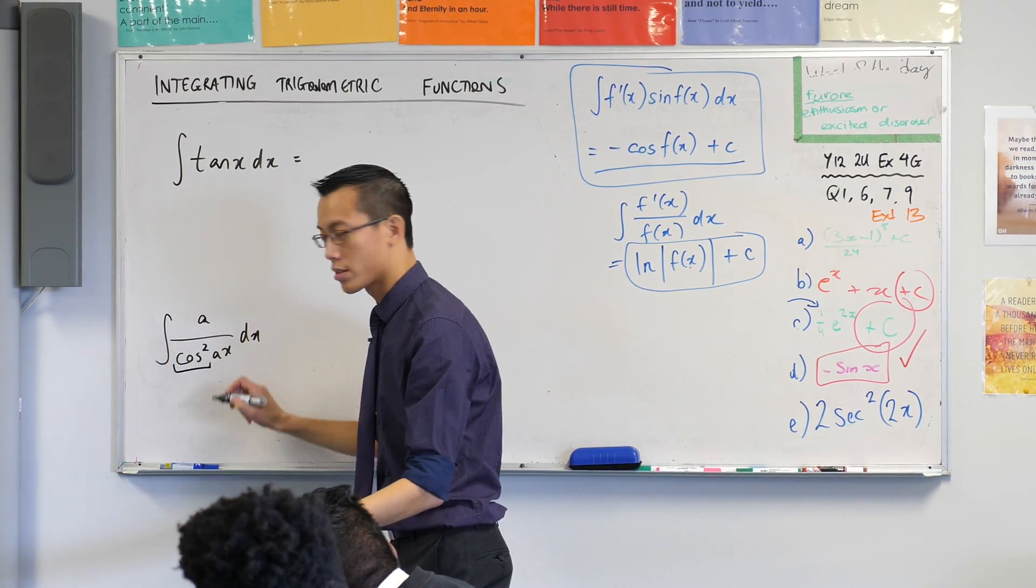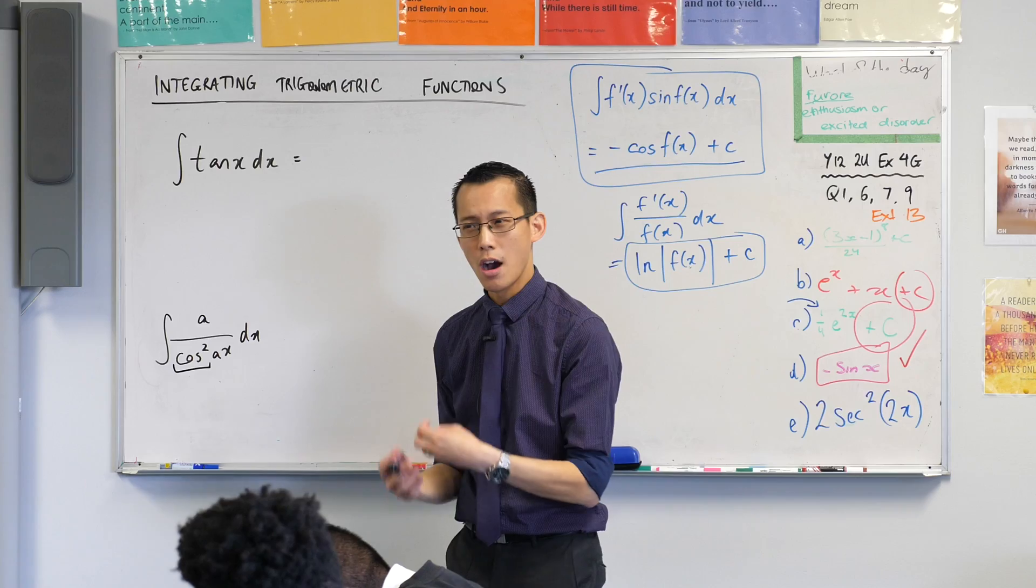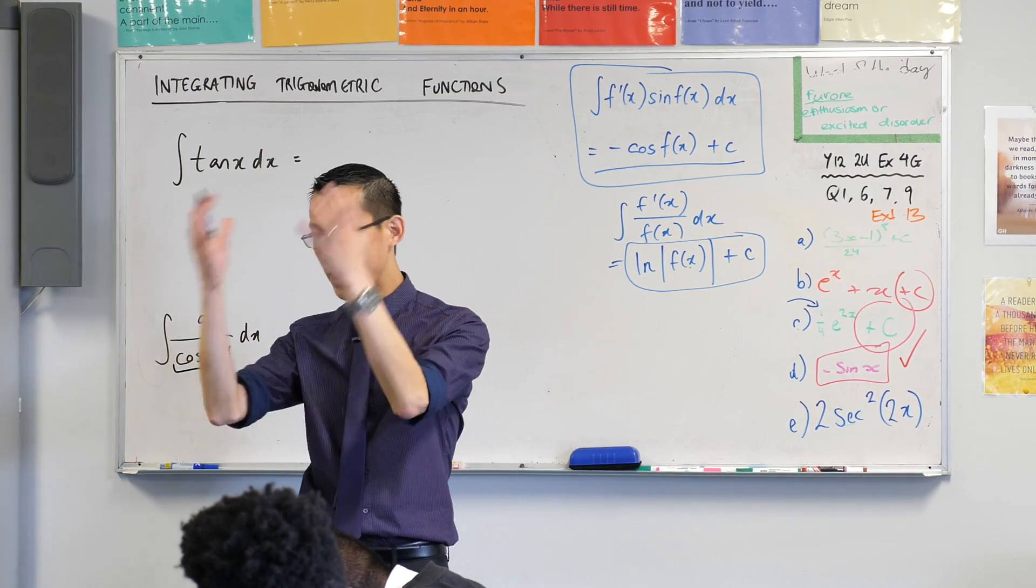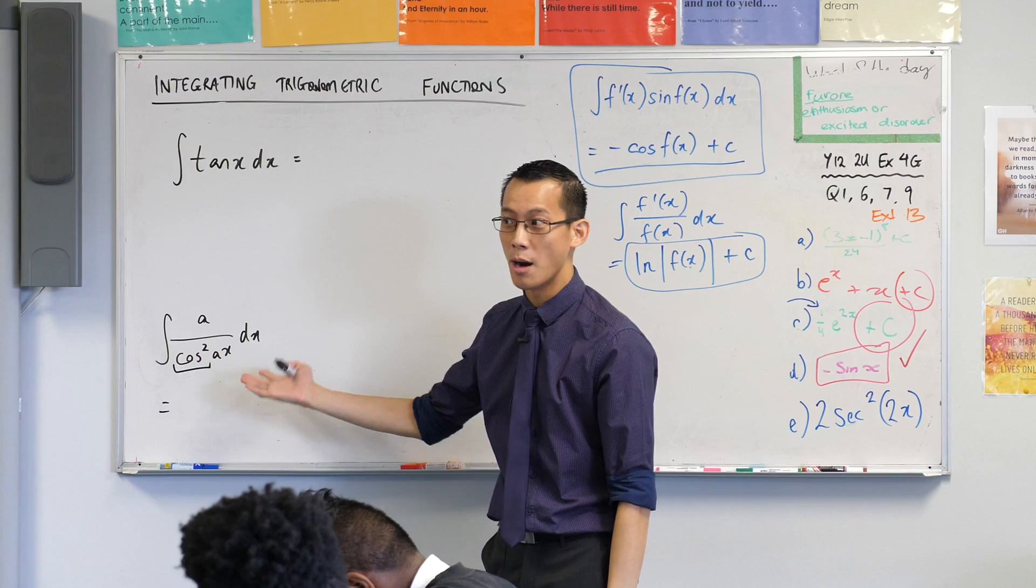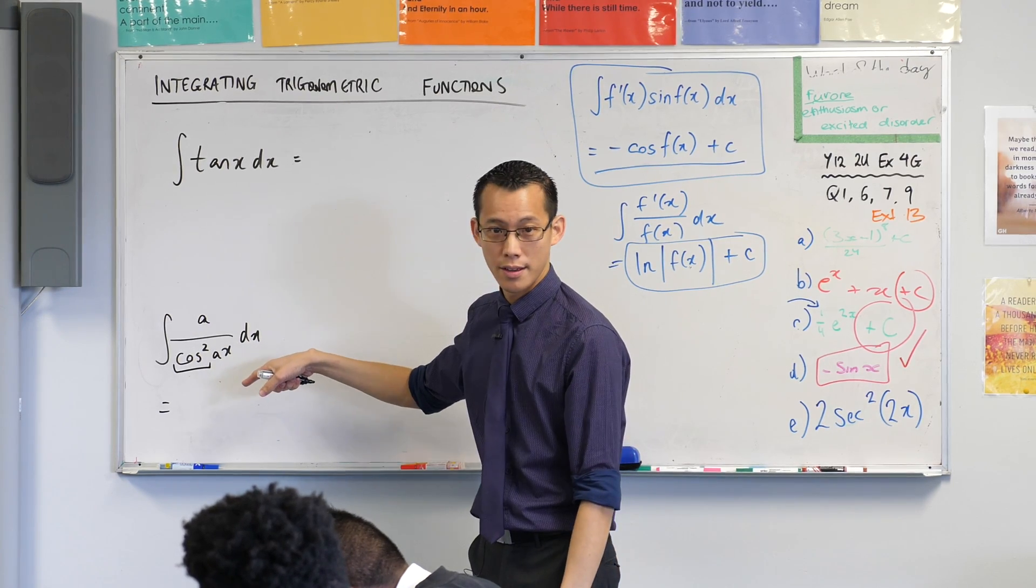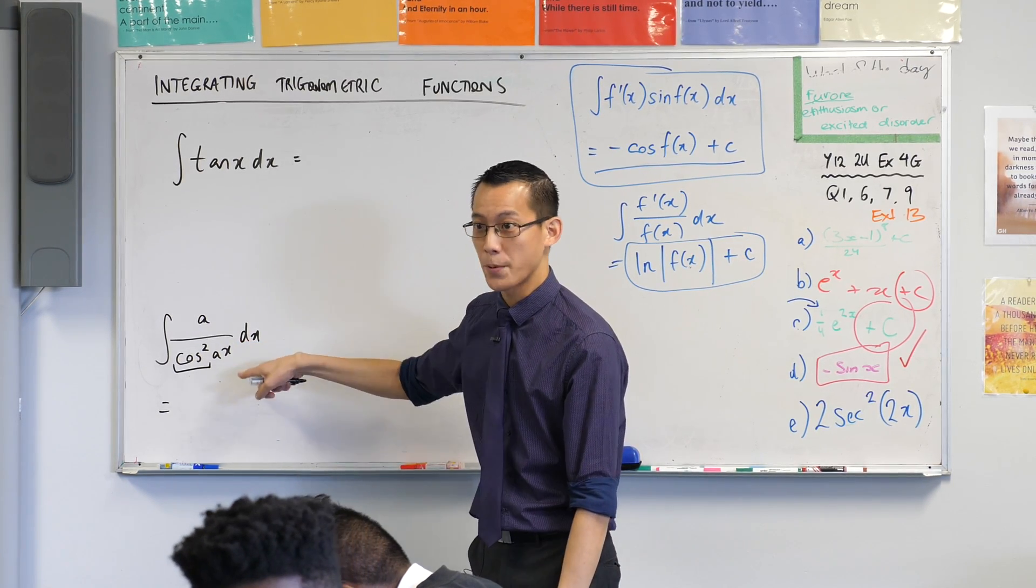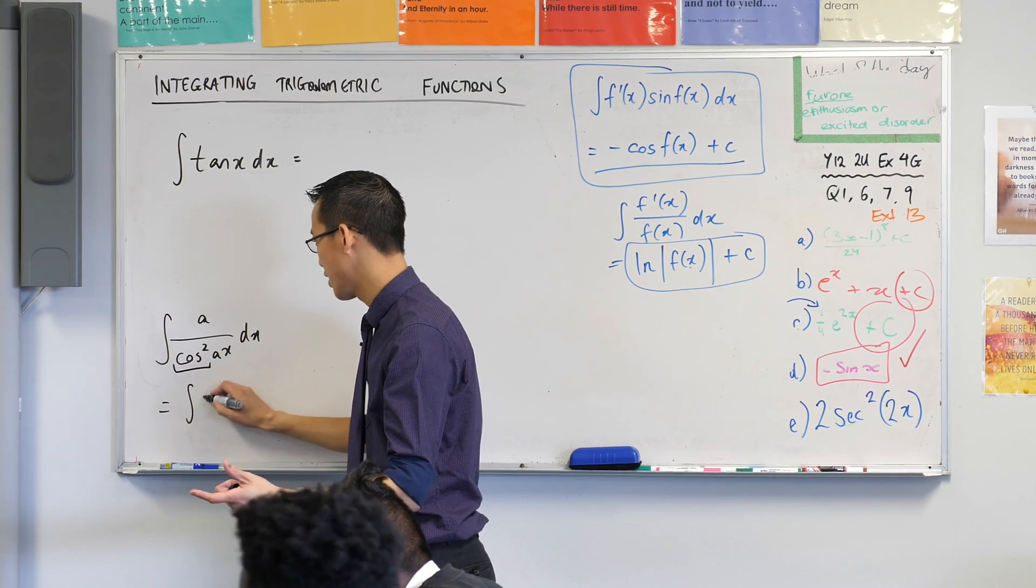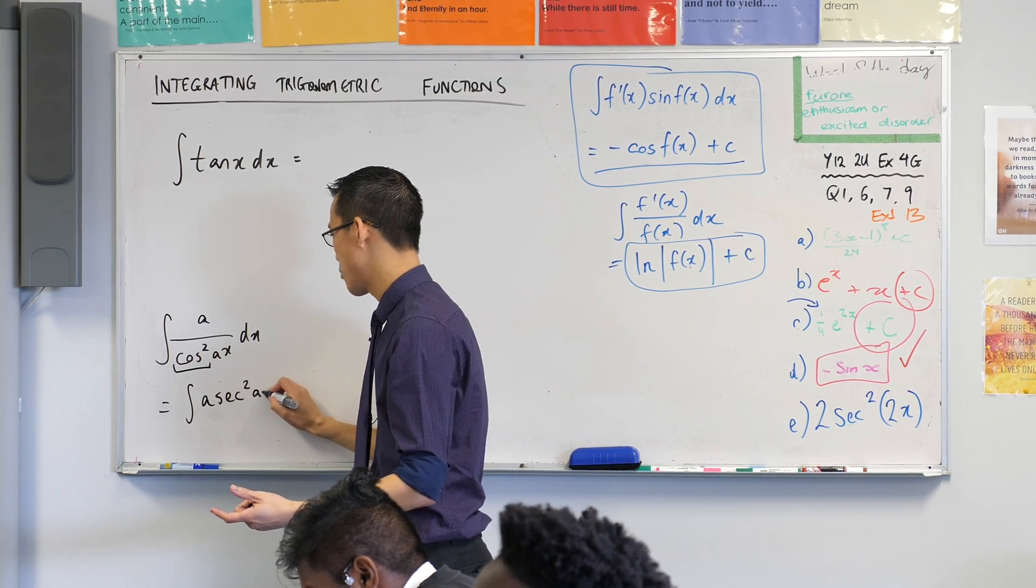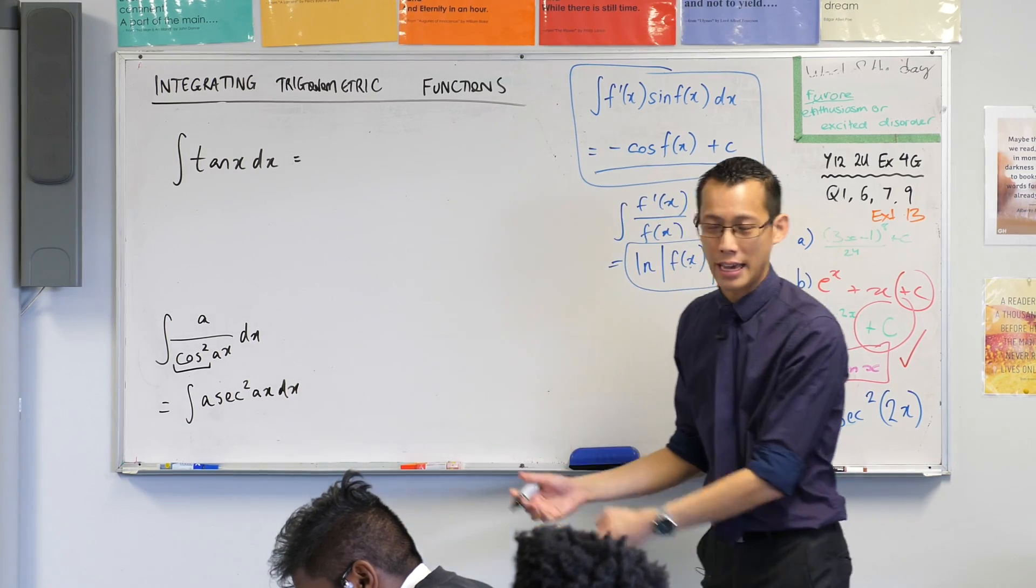Because this cos squared on the denominator, a way to write it that makes it more readily obvious is by using a trig identity. What trig identity helps us write a reciprocal? It's in this case the reciprocal of cos which is? It's sec, right? So this is actually how the question should be written. And you're like, I know how to deal with that, okay?